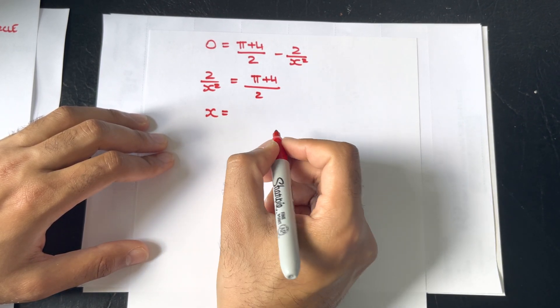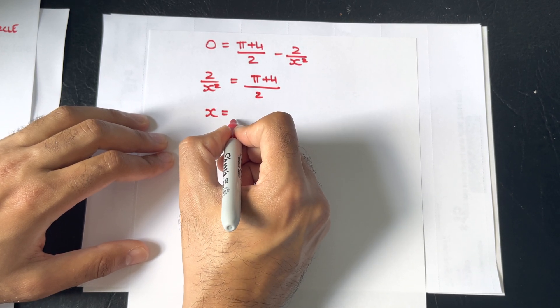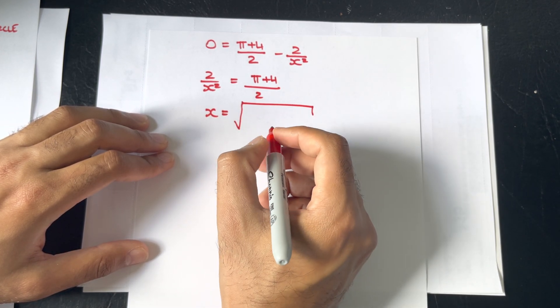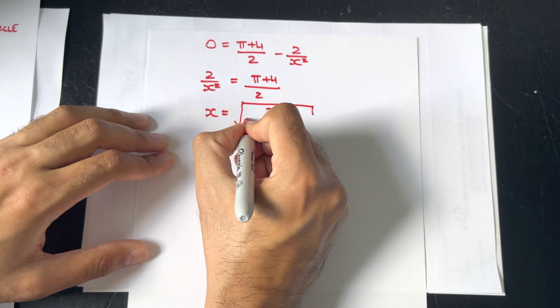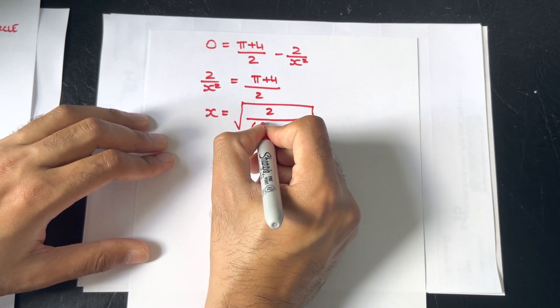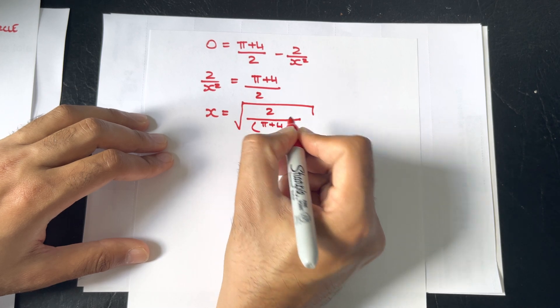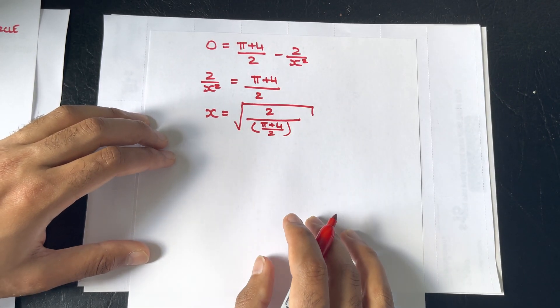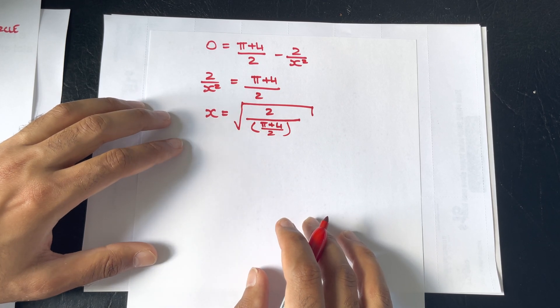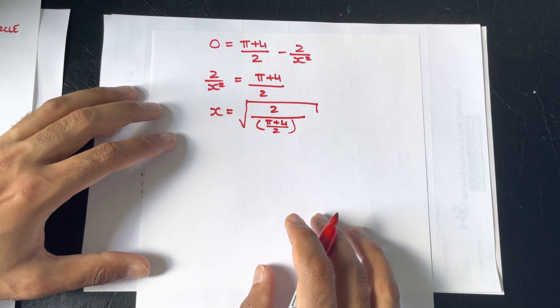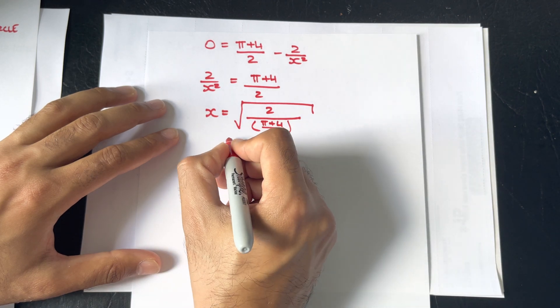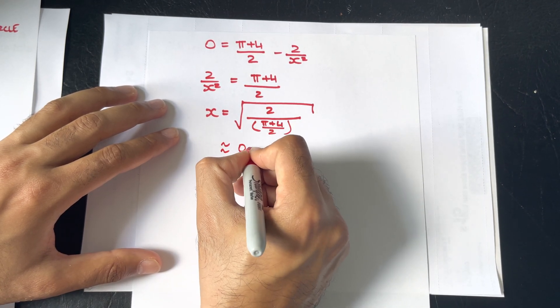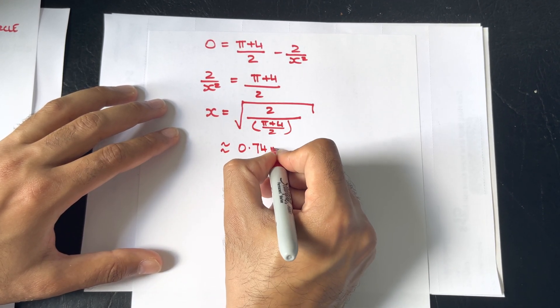So, x is now the square root of 2 over π plus 4 over 2. And, if you were to put that into the calculator, you will get approximately 0.74 metres.